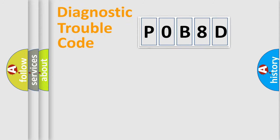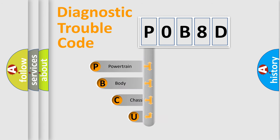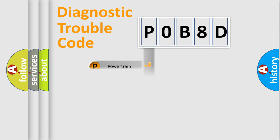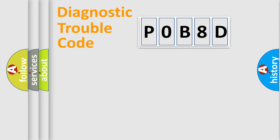First, let's look at the history of diagnostic fault code composition according to the OBD-2 protocol, which is unified for all automakers since 2000. We divide the electric system of an automobile into four basic units: powertrain, body, chassis, and network. This distribution is defined in the first character of the code.